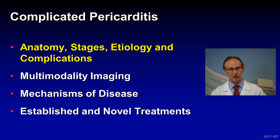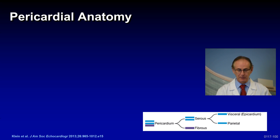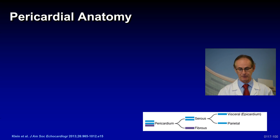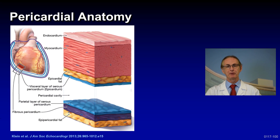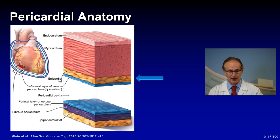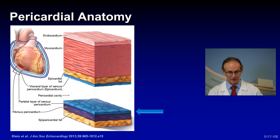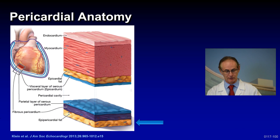Let's talk about the anatomy, stages, etiology, and complications. The pericardium has several layers. It has a serous layer divided into the visceral and the parietal pericardium, and then you have the fibrous layer. It's almost like an onion. On top you have the endocardium followed by the myocardium, then a layer of epicardial fat, then the visceral pericardium or epicardium, the pericardial cavity, followed by the parietal layer of the serous pericardium, a fibrous pericardium below, and the epipericardial fat.